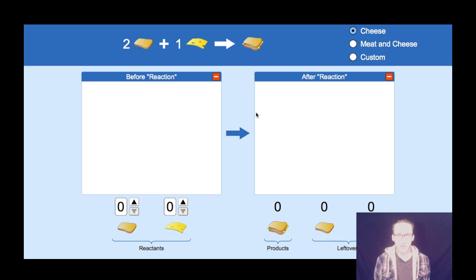All right, so as we turn to sandwiches to once again help us understand what's going on with stoichiometry, I want to start with my recipe that I have here at the top of the screen. I need two slices of bread, one slice of cheese to make one sandwich.